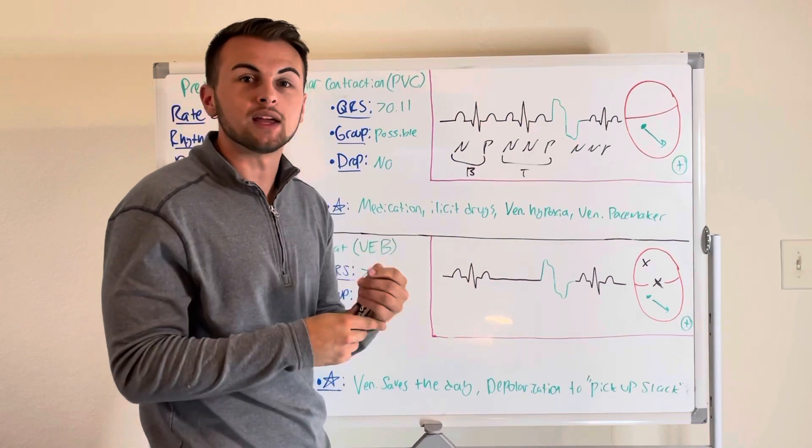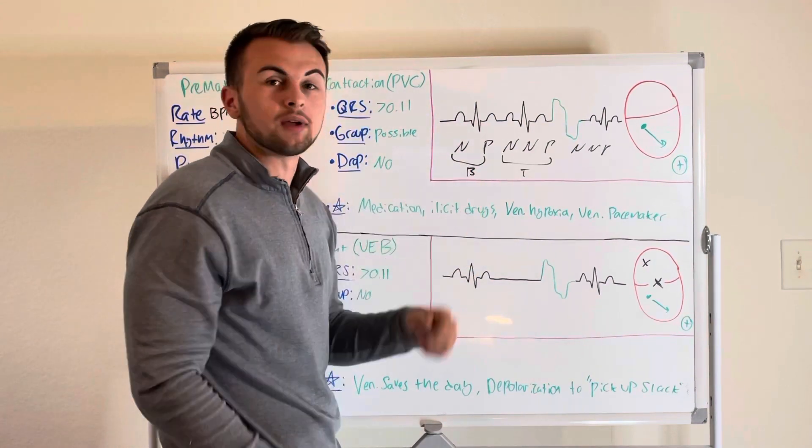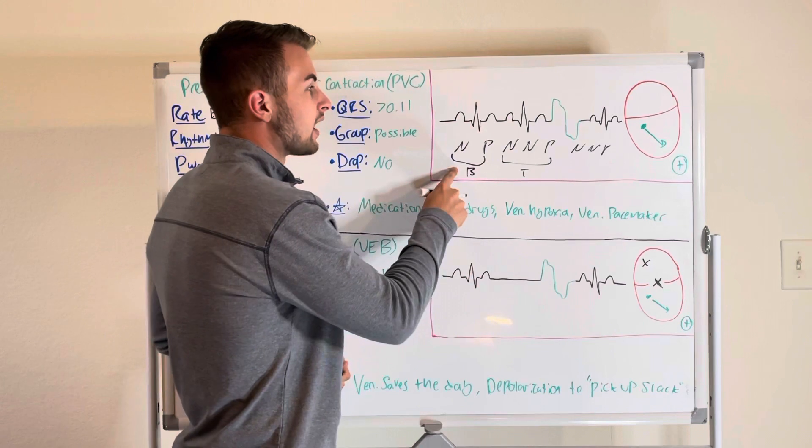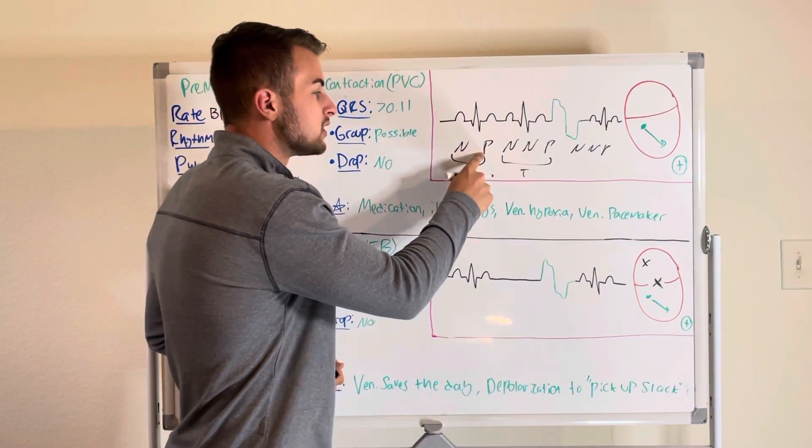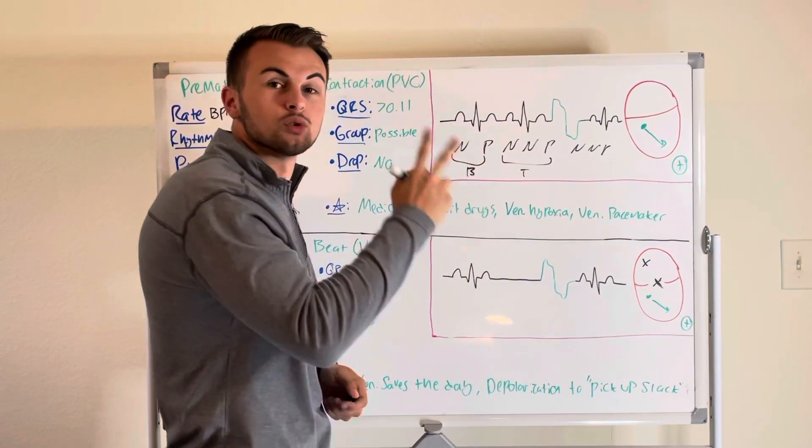So if there is a normal beat, PVC, normal beat, PVC, we say that this is bigeminy. So normal PVC, normal PVC, two, there's bigeminy.